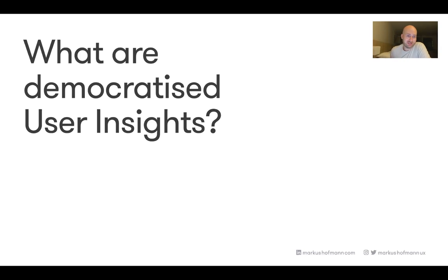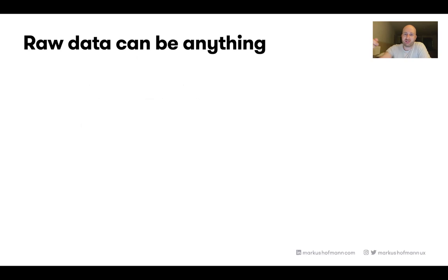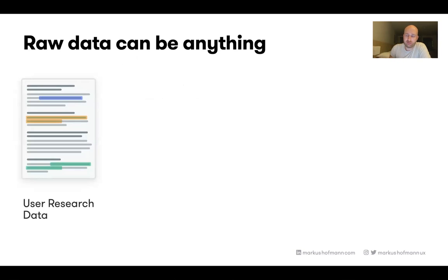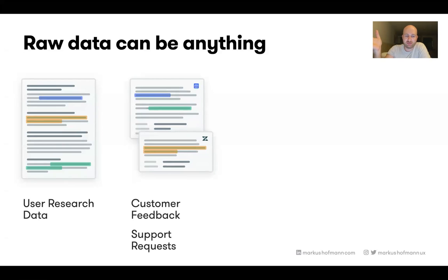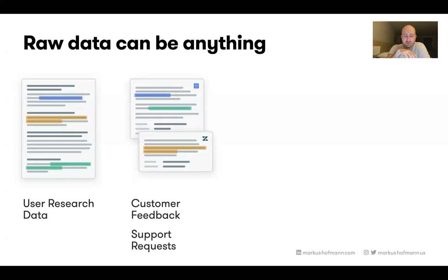The last point is democratizing user research — what actually goes into your research repository. In my opinion, it can be almost anything. Of course you have your typical user research stuff: transcripts, video recordings from interviews. But then you can expand that. The most obvious thing is customer support — their feedback and support requests. This kind of stuff is gold. Good researchers and good designers know that the first people you go to in a new company are customer support, because if anybody knows the users' problems, it's them.